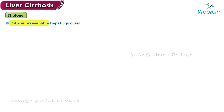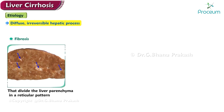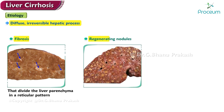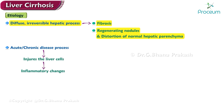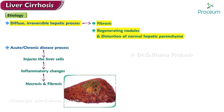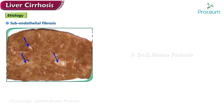Cirrhosis is a diffuse, irreversible hepatic process, characterized by fibrosis, regenerating nodules, and distortion of the normal hepatic parenchyma. An acute or chronic disease process injures the liver cells, which then undergo inflammatory changes leading to necrosis and fibrosis. Subendothelial fibrosis leads to the impairment of normal hepatic functionality.